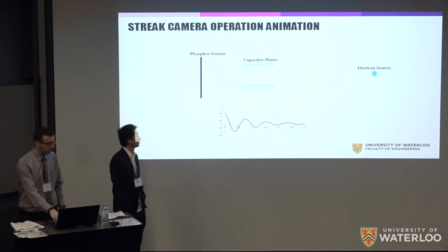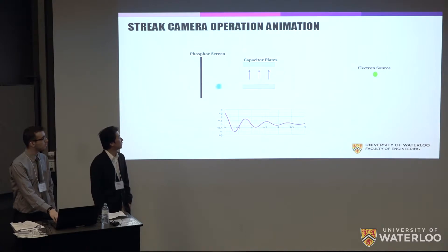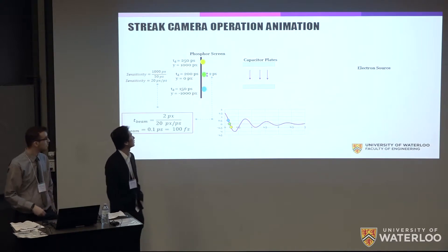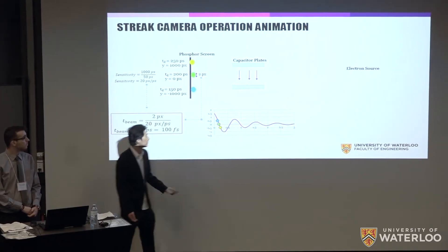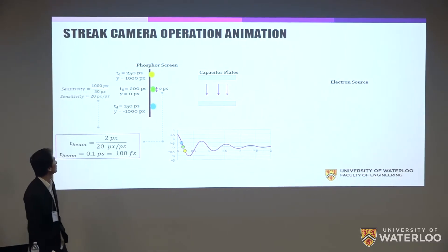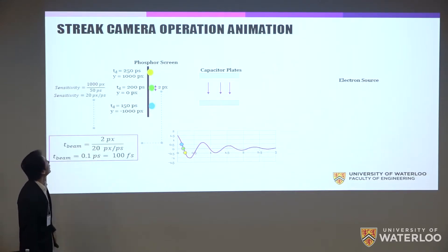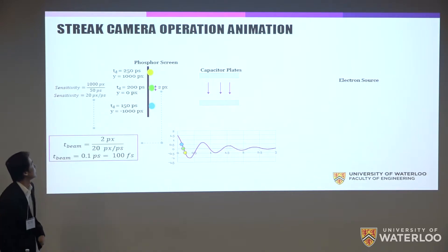We have a little animation going over the operation of the device. First, say we have an electron pulse and there's a field that deflects it — it gets captured on the phosphor screen. We have another pulse, and when the field is around zero it doesn't get deflected as much. And last we had a third measurement with the electron pulse.